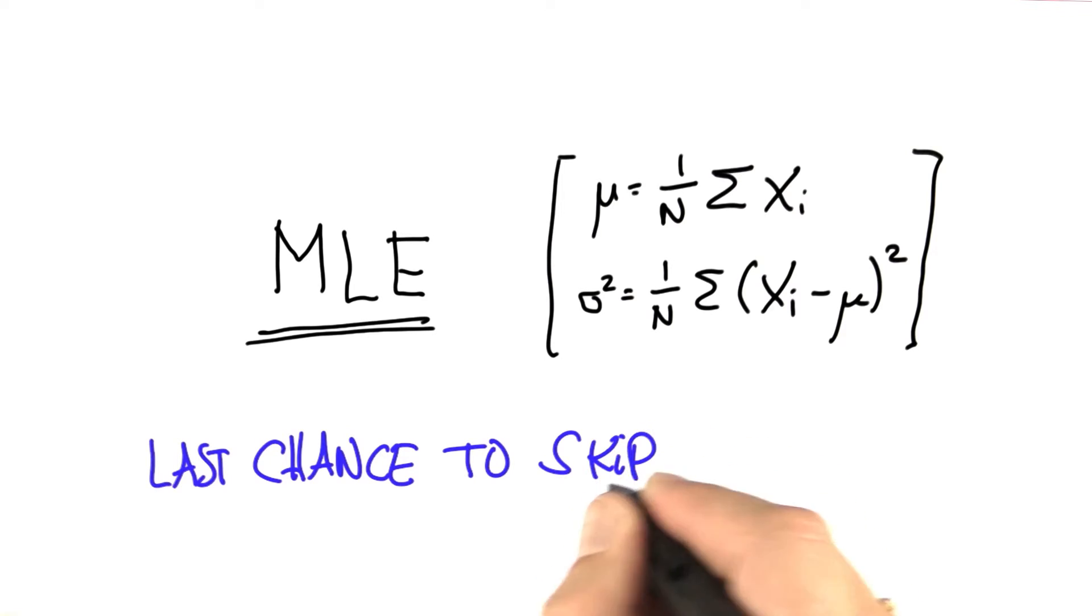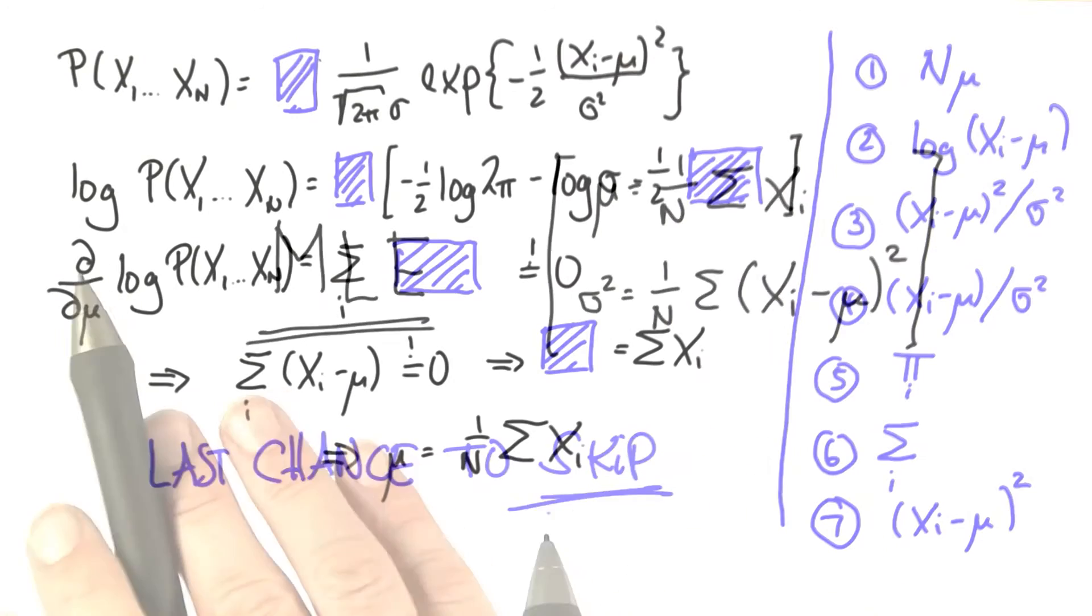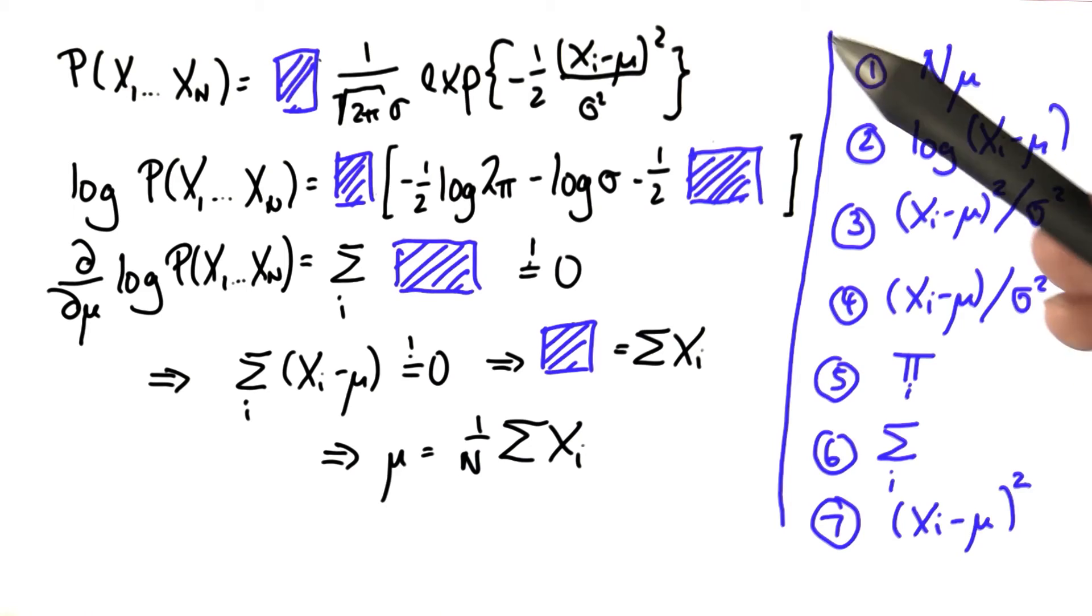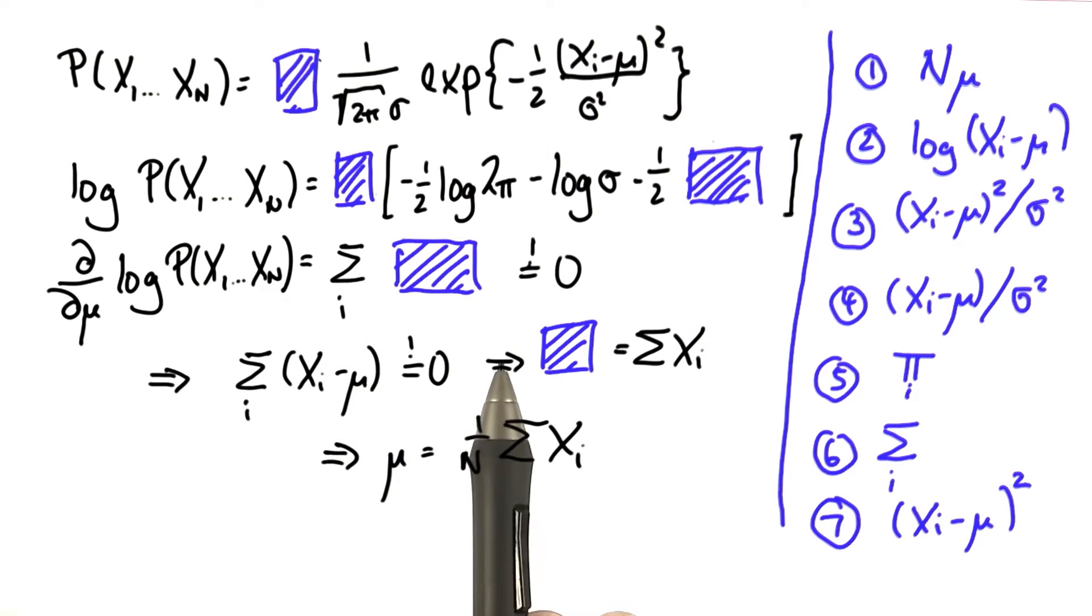Again, last chance to skip. So as before, there's the proof on the left side with a couple of blanks, 5 in total.